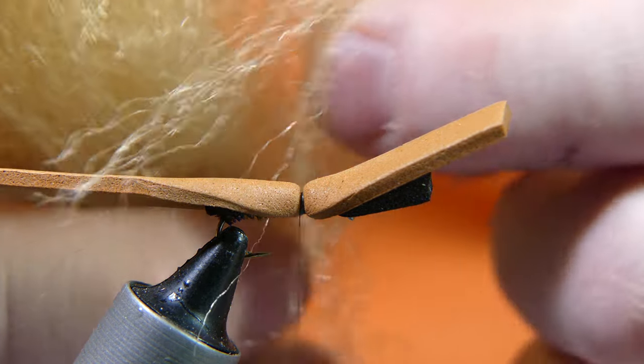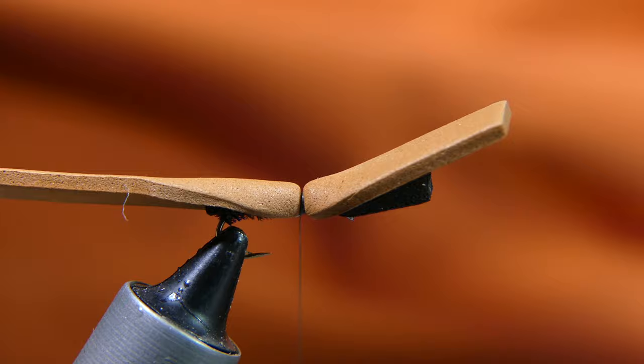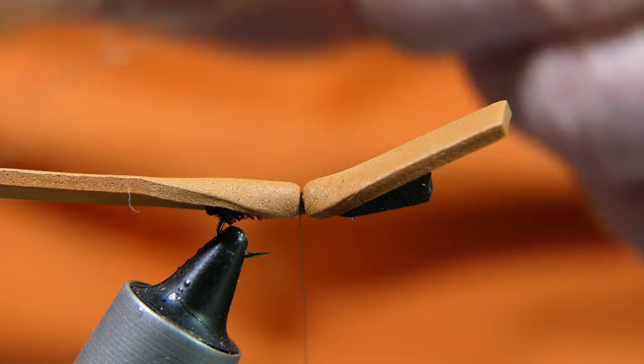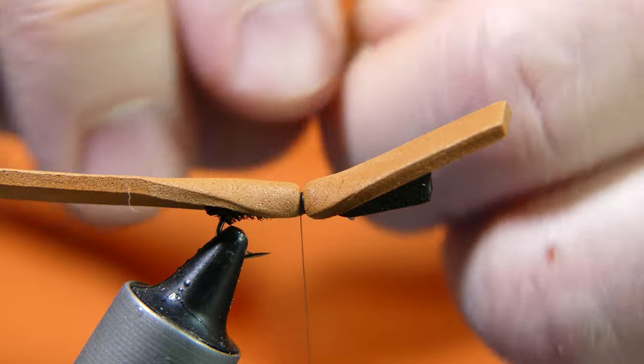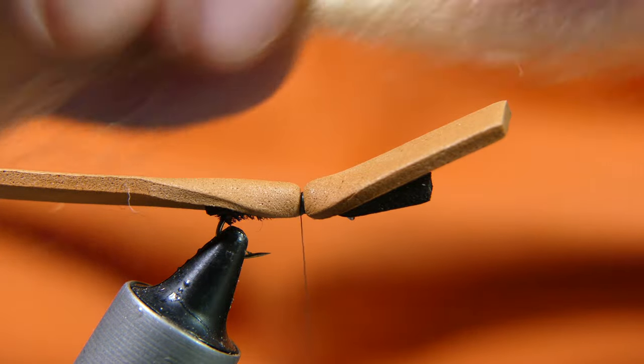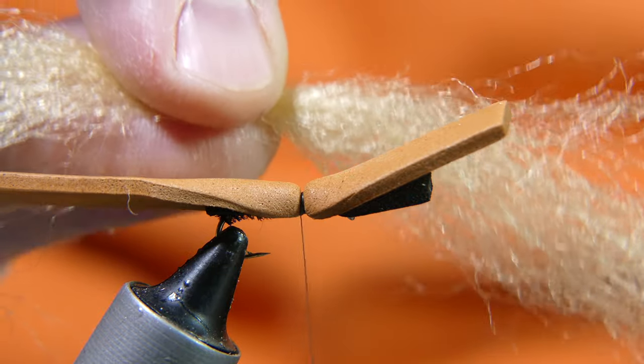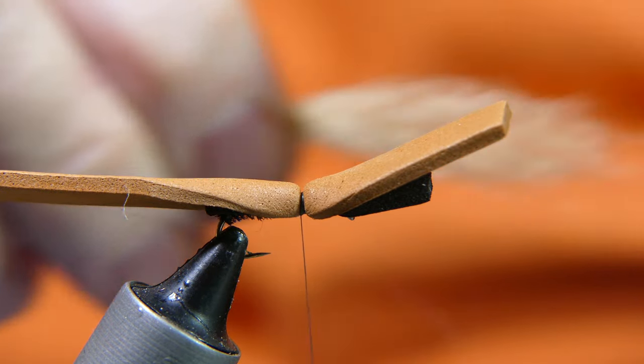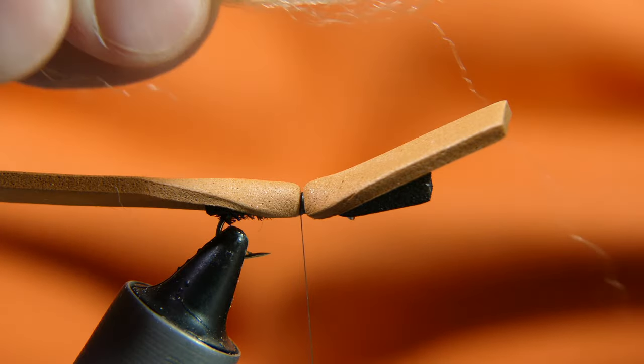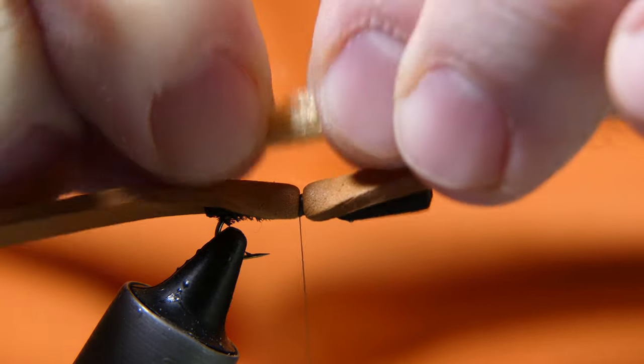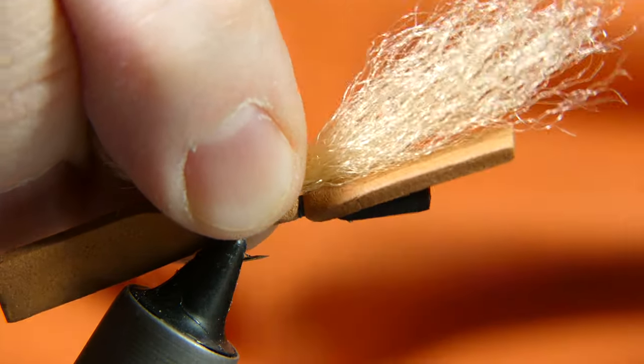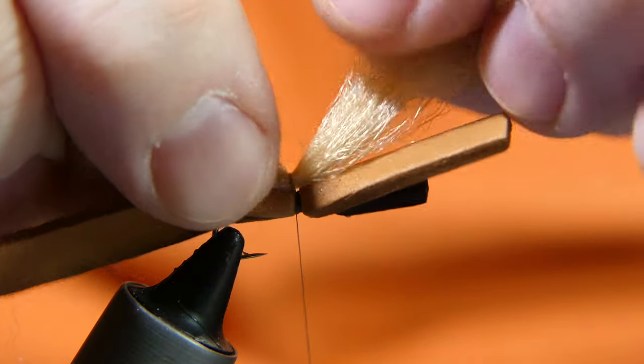These are really hairy fibers, but they're pretty normal. Now that you've got a section about the thickness that you want, just a pinch, nothing too crazy, just lay it right on top of your thread wrap there. Give it a wrap, center it.